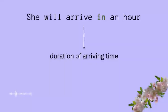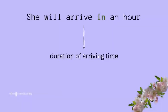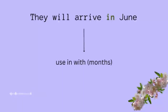She will arrive in an hour. We are basically focusing on the duration of the arriving time — when will she arrive? In an hour. They will arrive in June. Why are we using 'in'? Because of the month. When speaking about months we need to use 'in' — like in June, in December, in March, in May.